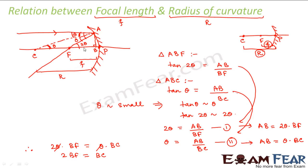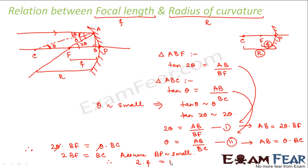Now, since point B is very close to the pole P, we assume BP is extremely small and can be neglected. Therefore BF can be considered as PF, which is the focal length f, and BC can be considered as PC, which is the radius of curvature R. So 2f = R, meaning the radius of curvature equals twice the focal length of a spherical mirror.